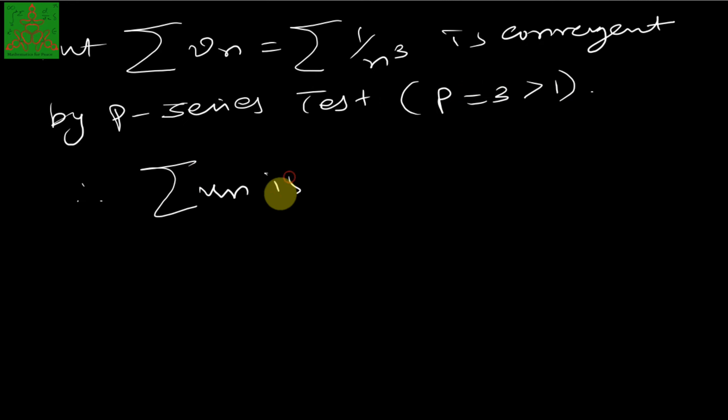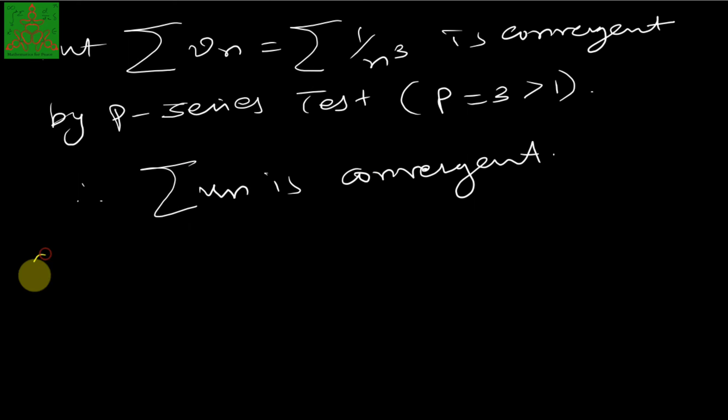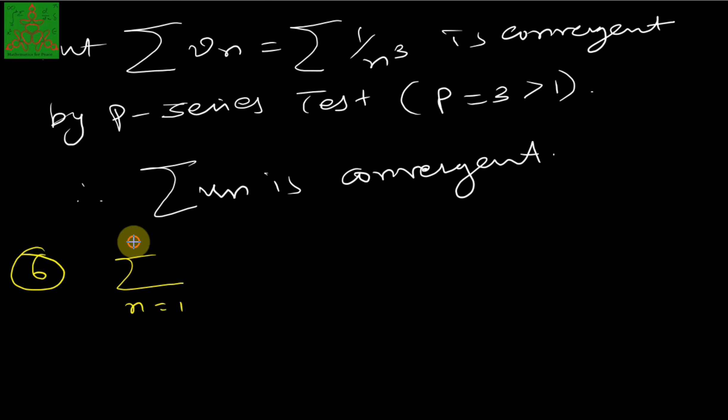The series summation of v_n = summation of 1/n³ is convergent by the p-series test since p = 3 > 1. Therefore summation of u_n = summation of (2n² + 3n)/(5 + n⁵) is convergent.